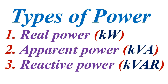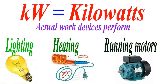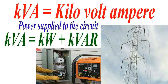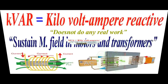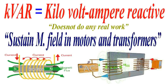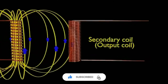Let's define the three types of power every electrical technician must understand. First, KW stands for kilowatts — that is the real power, the useful work your devices actually perform, whether it's lighting, heating, or running motors. The second is KVA — kilovolt-amperes — the total power applied to the circuit; it includes both real power and reactive power. The third is KVAR — kilovolt-amperes reactive — that is reactive power; it does no real work but is needed to sustain the magnetic fields in motors and transformers.